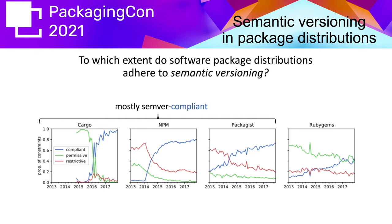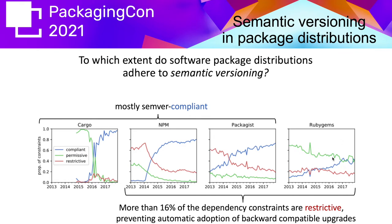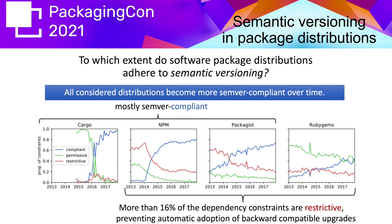The first three ecosystems — Cargo, NPM, and Packagist — appear mostly semantic versioning compliant, growing over time with 60–100% of constraints being compliant. For RubyGems, however, the blue curve is clearly low, under 50%, with a high percentage of packages being too permissive. There is also a relatively high percentage of restrictive constraints across ecosystems. The good news is that the first three distributions tend to become more SemVer-compliant over time.